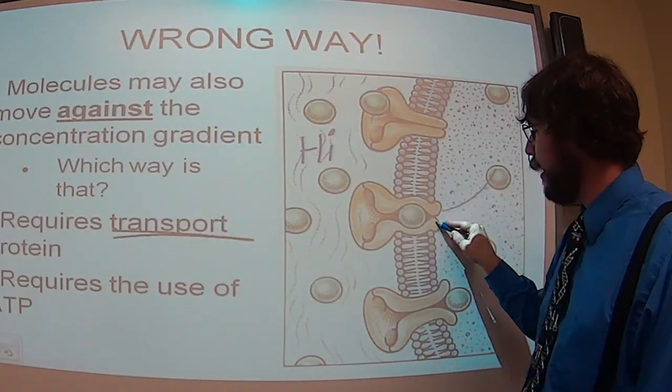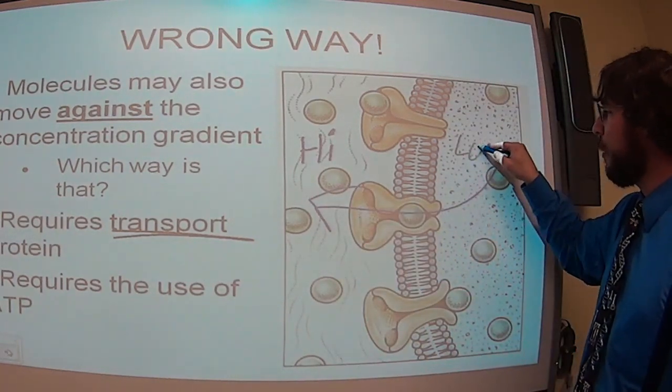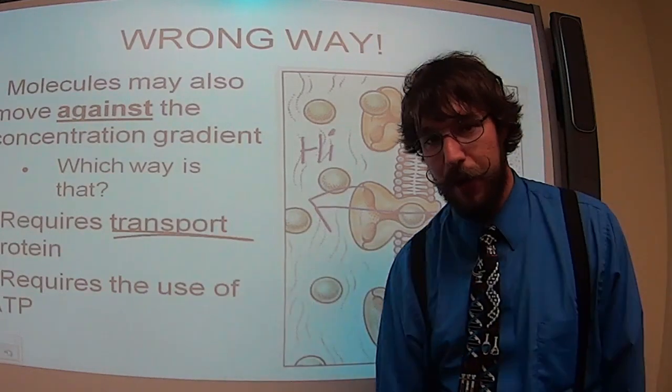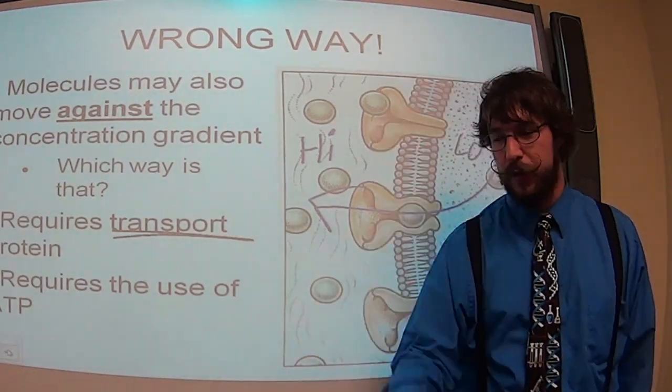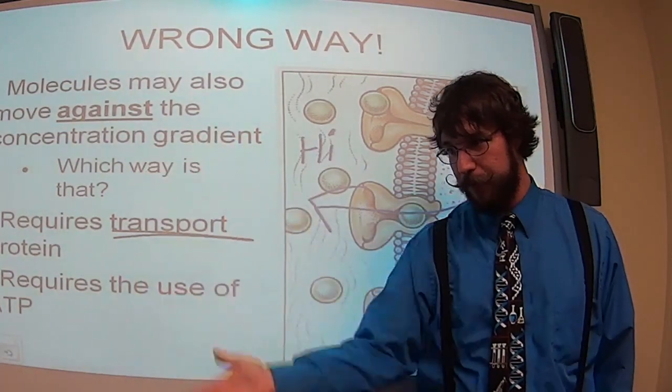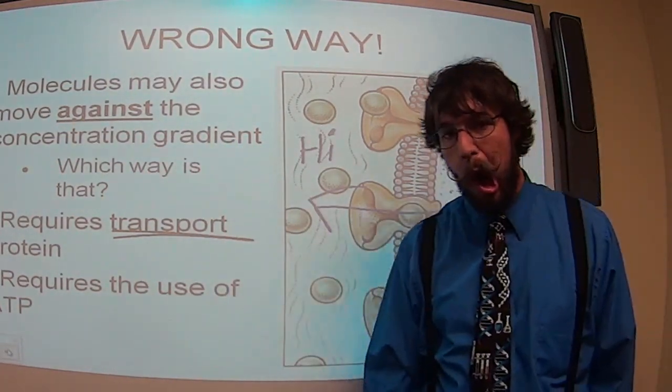Maybe it's something the cell doesn't want on the inside. So instead, we will use ATP and force them to go from the lower concentration towards the higher concentration, the way that they don't naturally flow. That requires ATP and the use of a transport protein.